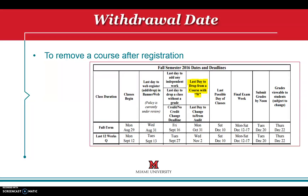If a student attends class after the drop deadline but later decides they no longer wish to continue with the course, a student can withdraw from the course by the withdrawal date or W deadline. Withdrawing from a course means that you stop attending the course. A W will appear on the student's academic record. This grade is not included in the student's grade point average and the student does not earn credit for the course. If a student remains in a course after the W deadline, the student will keep the grade they earn in the course.